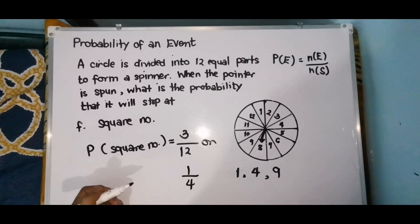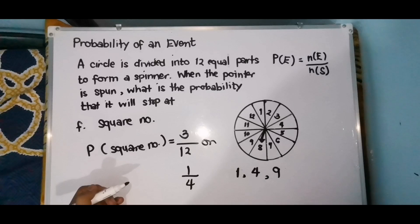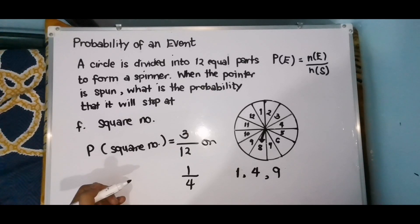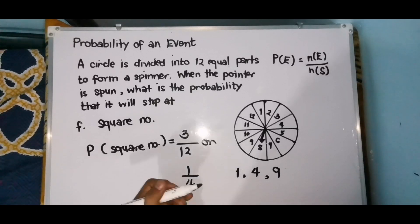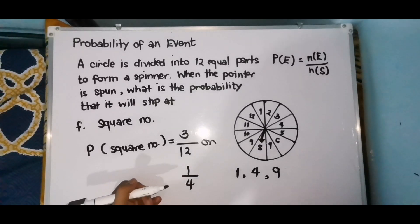So that concludes our lesson regarding probability of an event. Ang ating experiment ay spinning a spinner, wherein it is divided into 12 equal parts. I hope that you learned something from our video today. Pwede mo nitong i-share, and see you on my next video lesson. Bye!